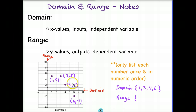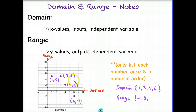Now let's look at our range. Our range consists of the y values. In this case, the smallest y value we have is negative 1, followed by a 2. Notice that we actually do have two 5s, but I won't list both — I will just list one. And that is how you list your domain and your range.